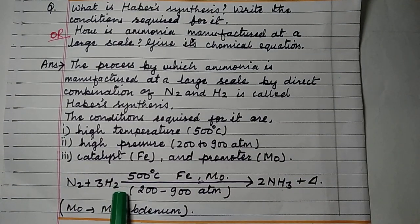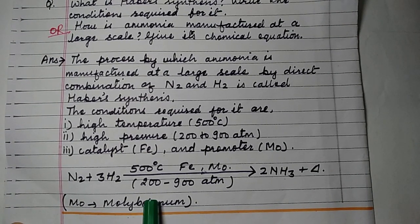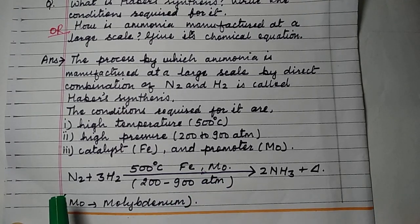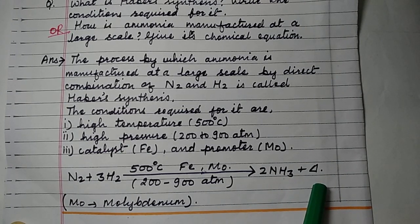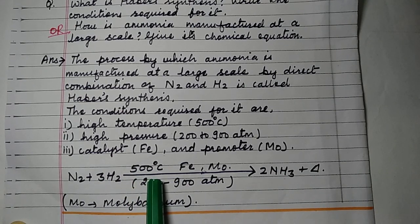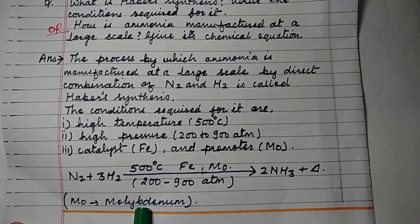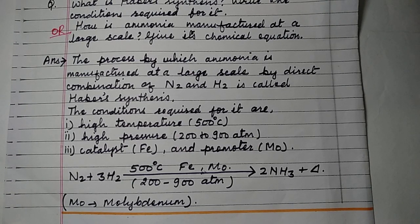The chemical equation for Haber's synthesis: N2 + 3H2 → 2NH3 + heat. This is an exothermic reaction carried out at 500 degrees Celsius, with iron (Fe) as catalyst, molybdenum (Mo) as promoter, and 200 to 900 atmospheric pressure.